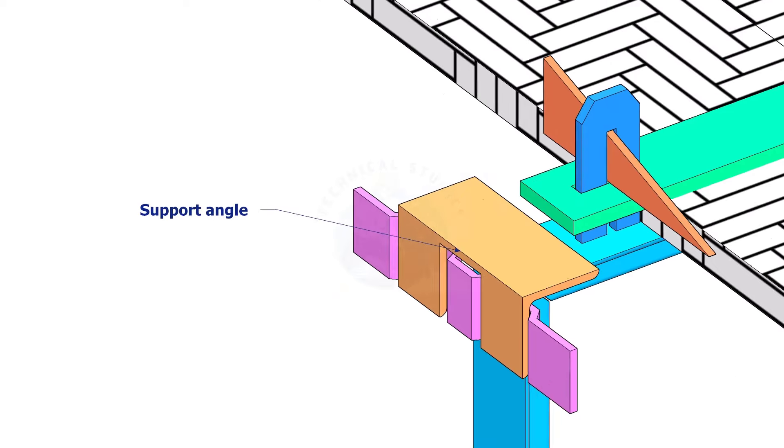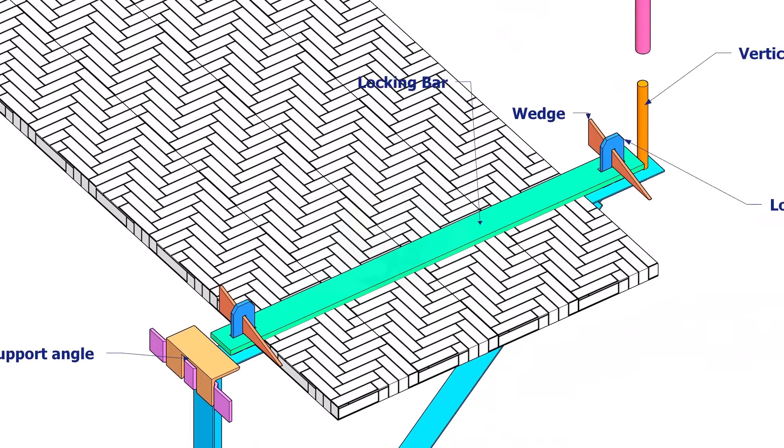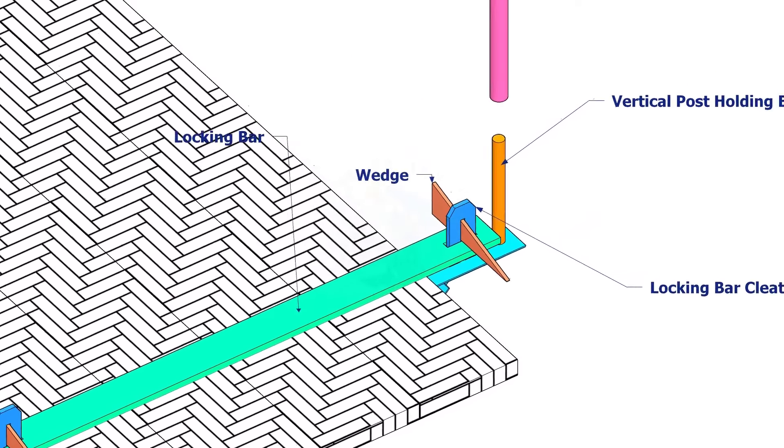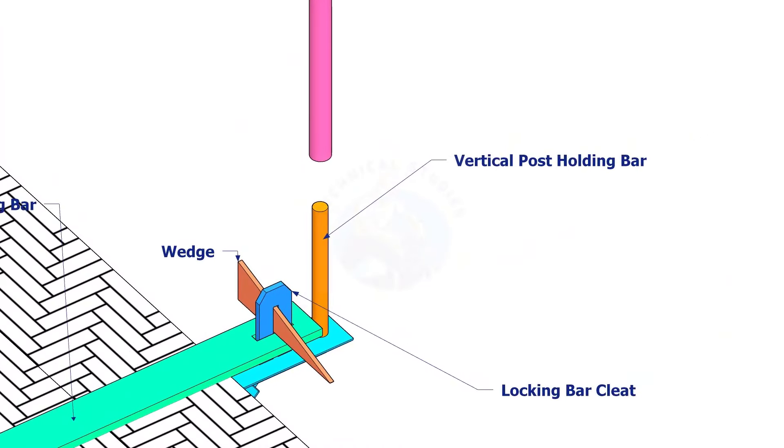Support angle shall be welded to the main frame. Vertical post holding bar will hold the vertical post vertically.